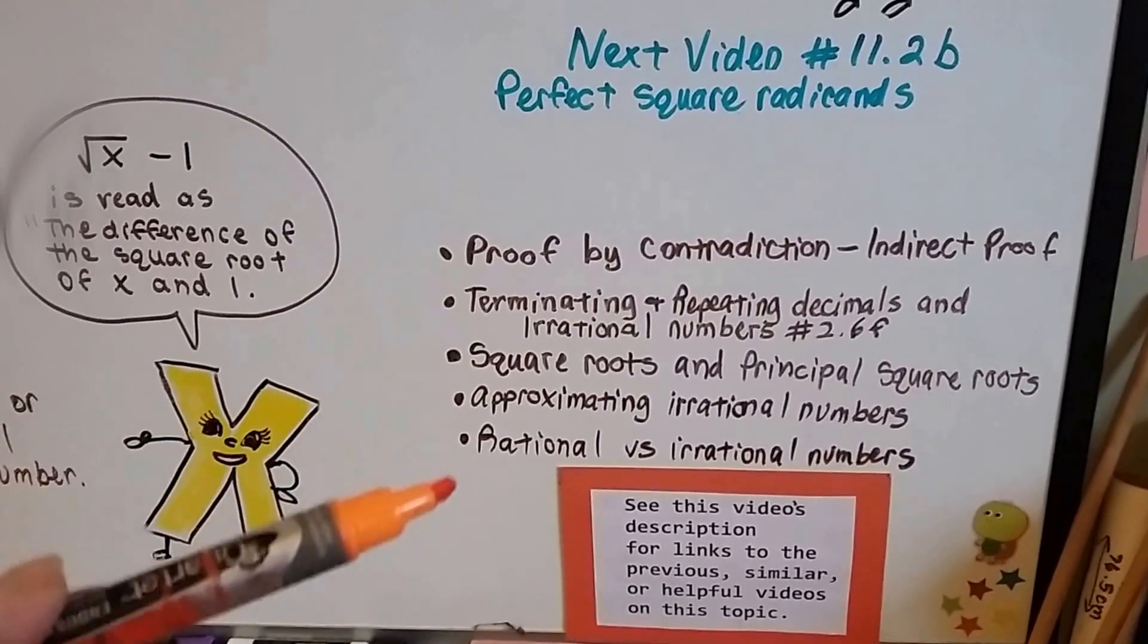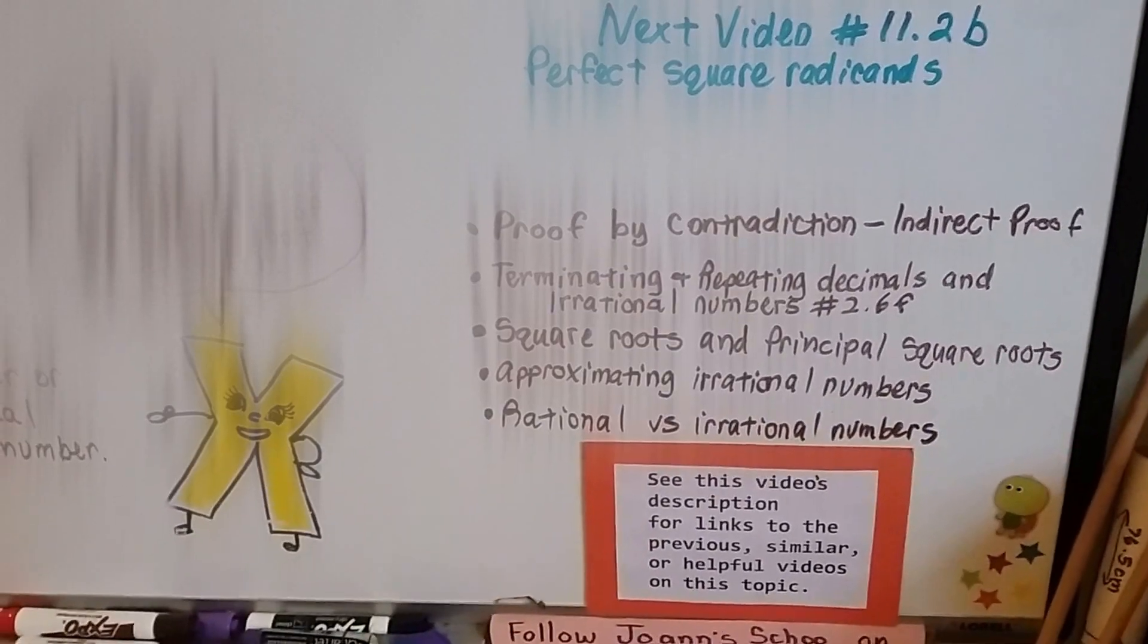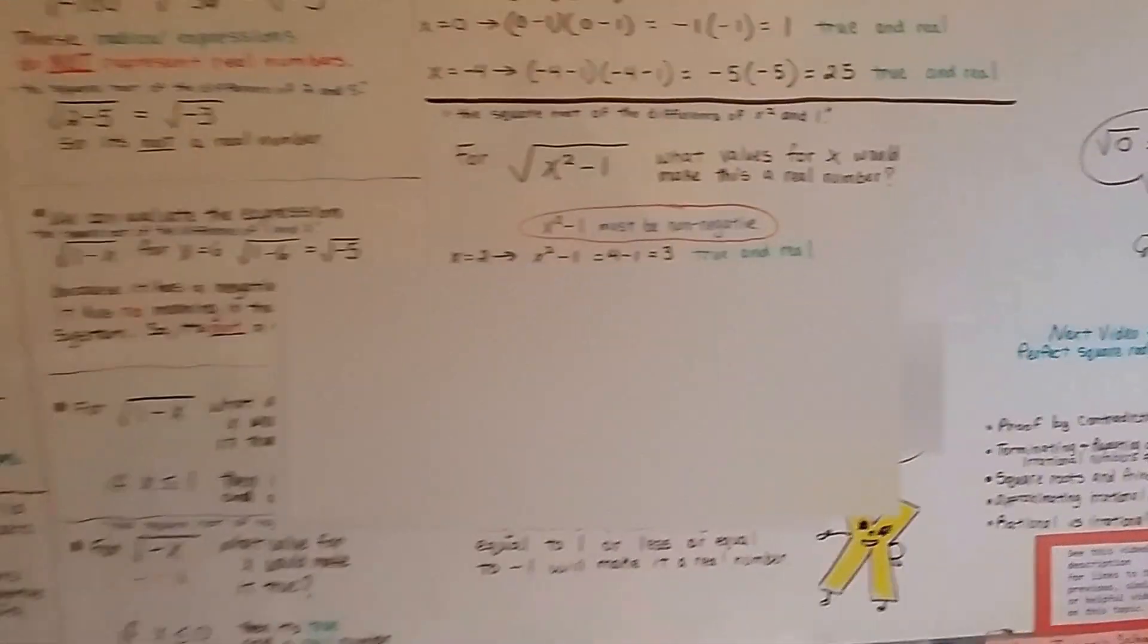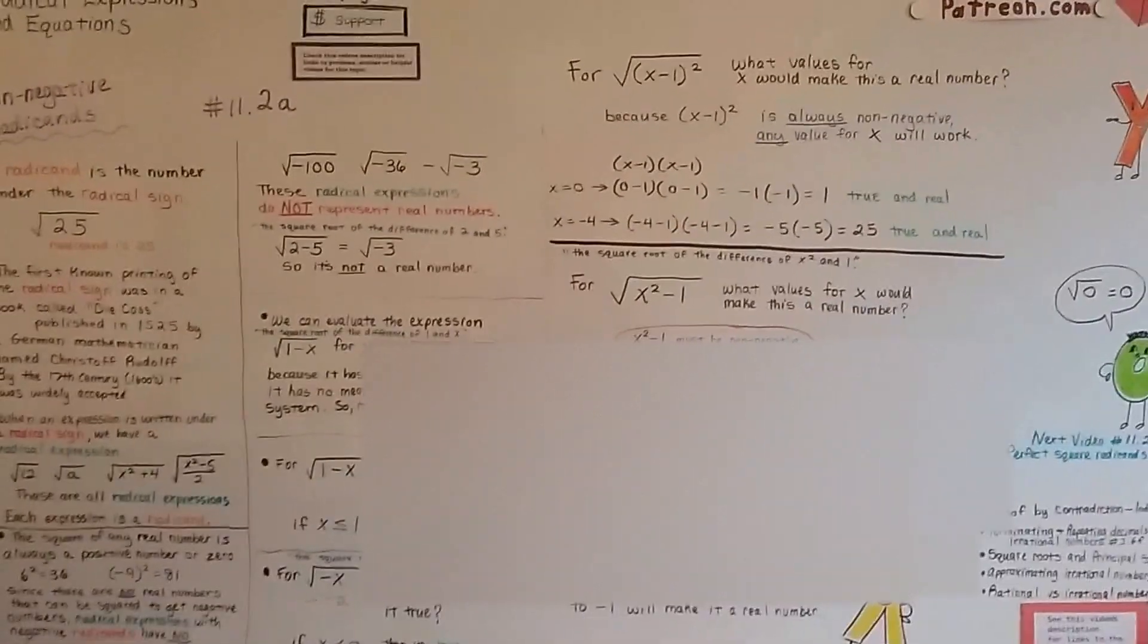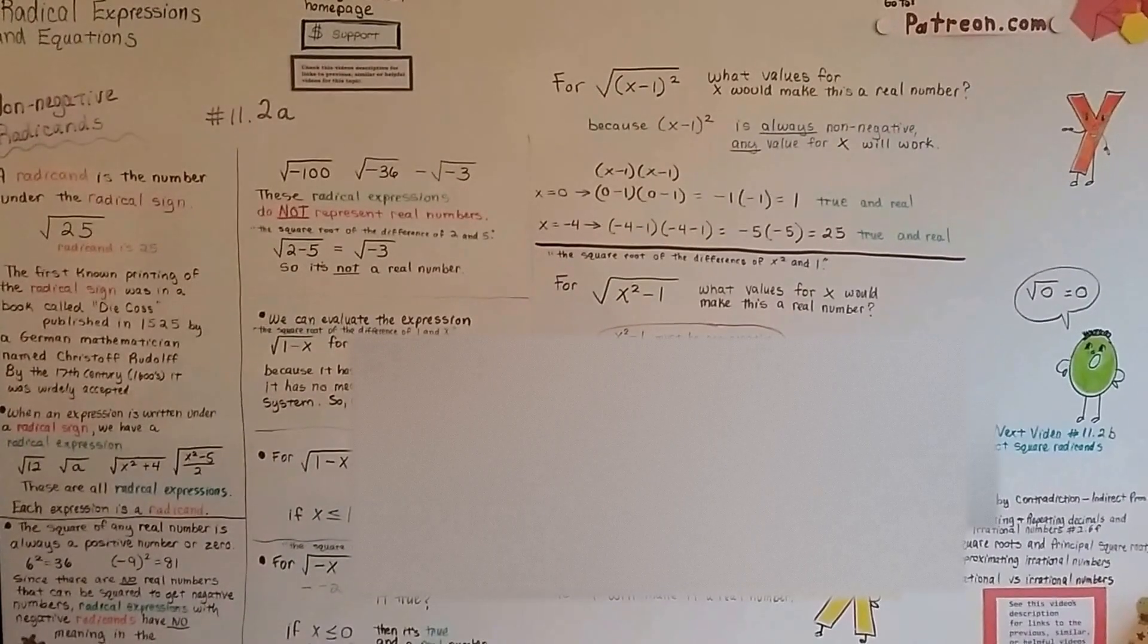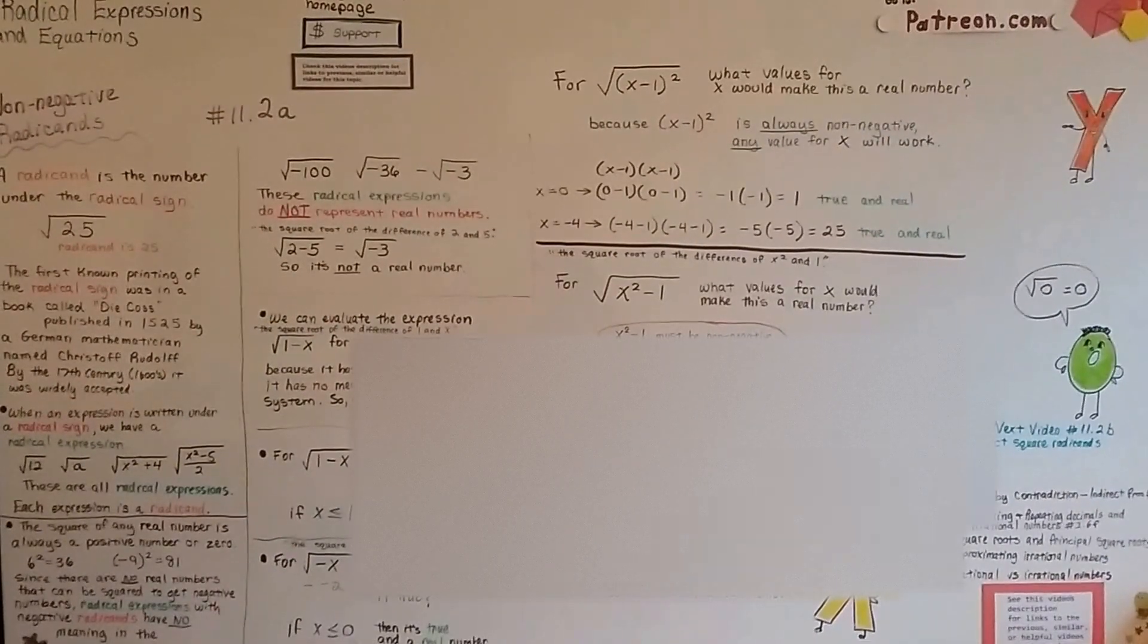And we talked about these other topics here, and they're all in the description of this video, so you can just click on them and do a quick review or watch them if you haven't seen them before. So, let's talk about some perfect square radicands. Stick with me. We're going to get through this. We're almost done with Algebra 1. We've only got a couple more chapters to go. Bye!